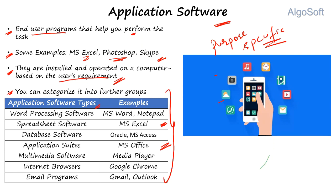The main point about application software: they are purpose-specific. They are downloaded as per user requirement — one may need it, one might not. And there are plenty of softwares as per the need: word editing, spreadsheets, media content, internet browsers, and so on. Whenever you want to develop application software, your purpose needs to be very clearly defined.